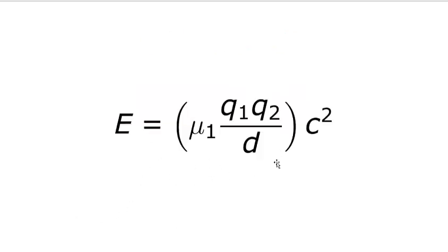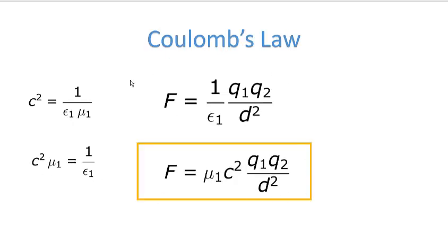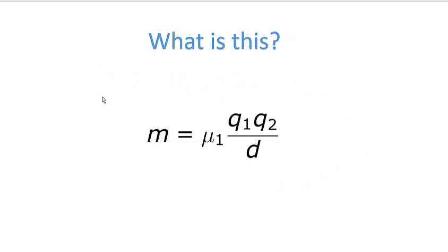Force times distance is energy, so I now have an equation that reads E equals something times c². That something must be a mass term — it's the M in E = Mc². So I've derived this from scratch, simply by trying to write Coulomb's law in terms of permeability of free space. This mass term — permeability times Q1 times Q2 divided by distance — is what we need to examine for its physical meaning.